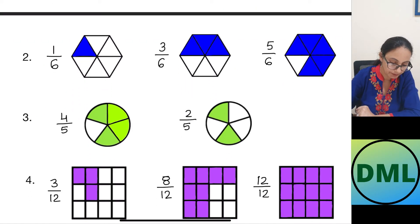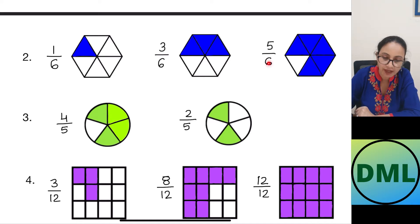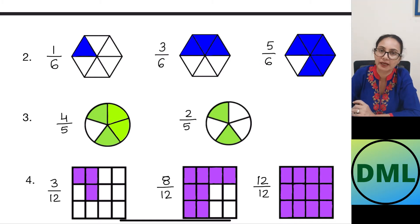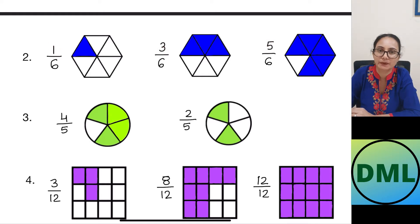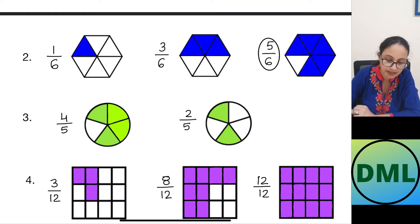Let's see one more example. In this fraction it is 1 over 6 — out of 6 parts, 1 part is shaded. Next fraction is 3 over 6 — out of 6 parts, 3 parts are shaded. Next fraction is 5 by 6 — out of 6 parts, 5 parts are shaded. Now I have to look for the greatest fraction. The denominators are the same. I look for my numerators: 1, 3 and 5. Which one is bigger? 5. So 5 by 6 is the greatest fraction.